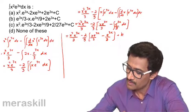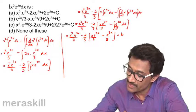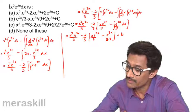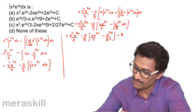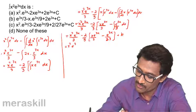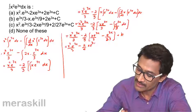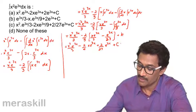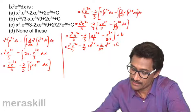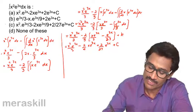Since the derivative of e^(3x) is 3, we get an extra factor of 3 in the denominator each time we integrate. The final simplified result is: x²·e^(3x)/3 minus (2/9)·x·e^(3x) plus (2/27)·e^(3x) plus constant C.